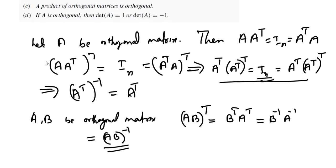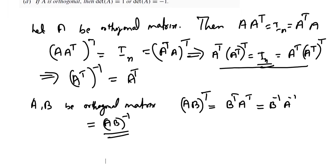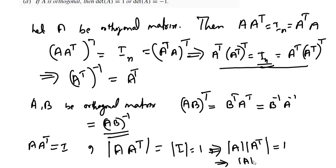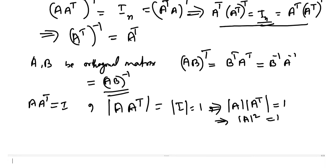If A is an orthogonal matrix, then the determinant of A will be either 1 or minus 1. Since A is orthogonal, A times A transpose equals the identity matrix. Taking the determinant: det(A) times det(A transpose) equals det(I) equals 1. Since det(A transpose) equals det(A), we get det(A) squared equals 1, which implies det(A) equals plus or minus 1.